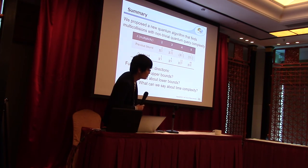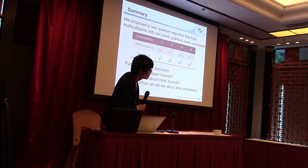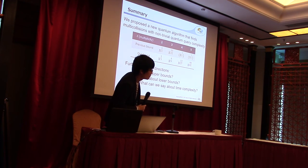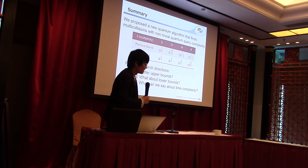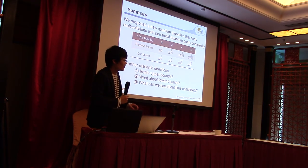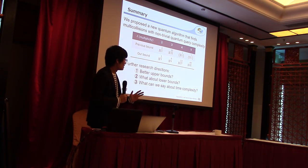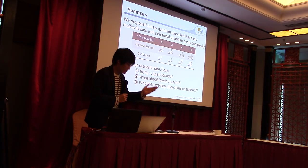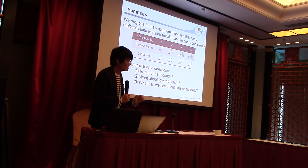But in your algorithm, you need a lot of memory. Is it clear what the trade-off is? For example, if only a small amount of memory is allowed, what would be the best running time in the quantum algorithm for finding three collisions, four collisions, etc.? The speaker responds: it is a very, very interesting question. I think I have to study this topic, but I have not studied enough, so I cannot say anything here.